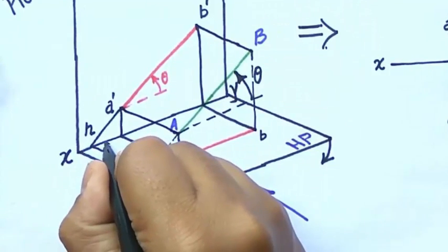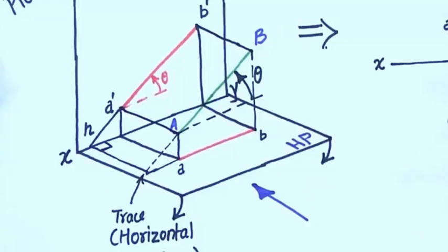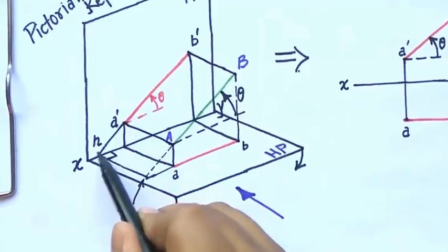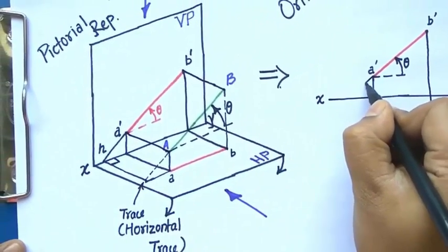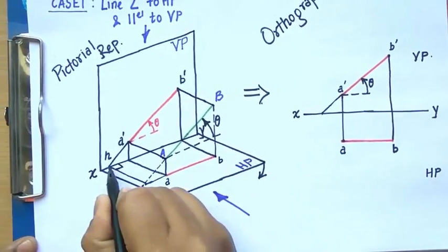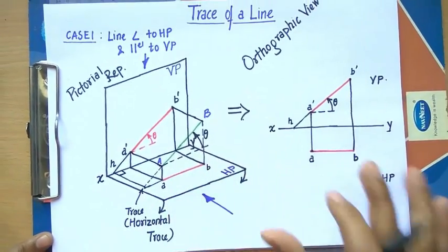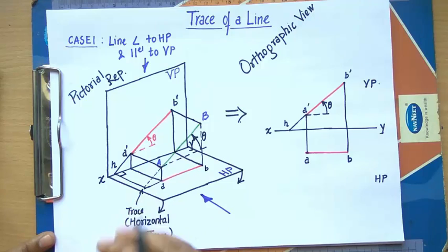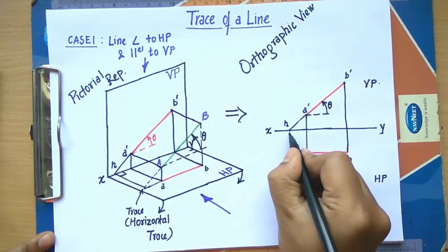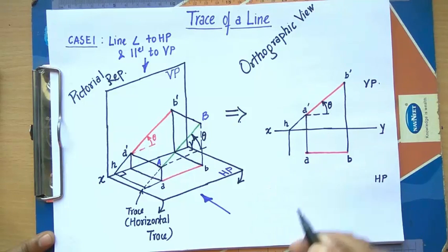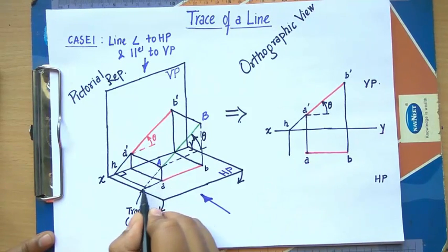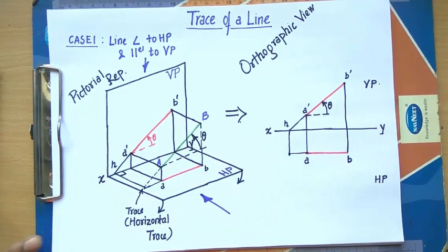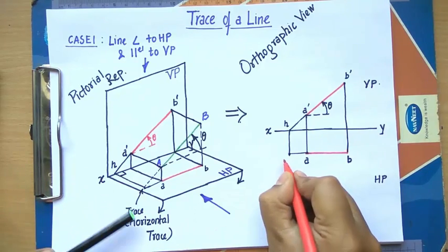This angle that the line makes is going to be absolutely 90 degrees — it's an orthographic view. Extending these lines with the help of a scale, this point corresponds to point H in the orthographic view. When you turn the horizontal plane by 90 degrees, this line comes down here. Bringing this line down in this direction gives us the horizontal trace — this is the precise location of the horizontal trace.